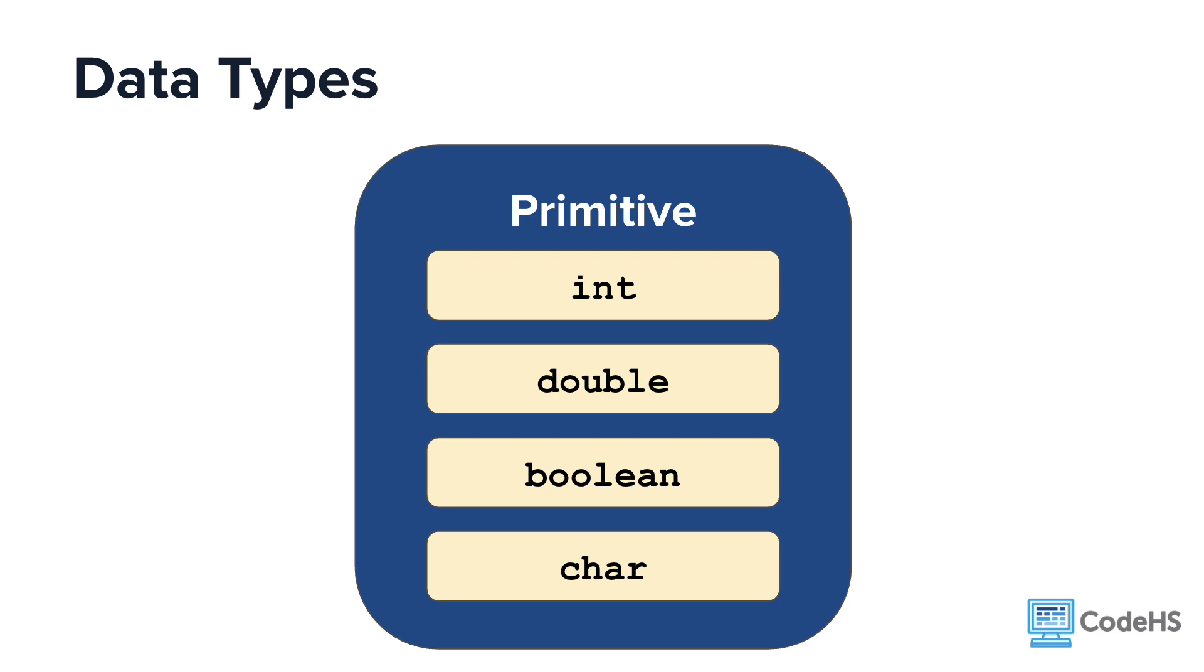While there are many primitive data types, we'll focus on these four: int, double, boolean, and char. A variable of a primitive type holds a primitive value from that type. Let's dive into each of these data types.